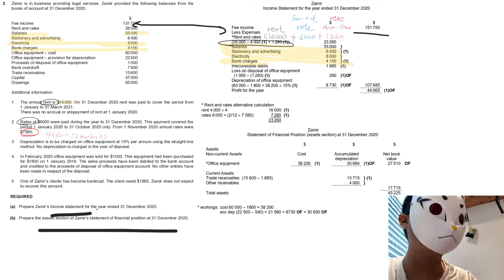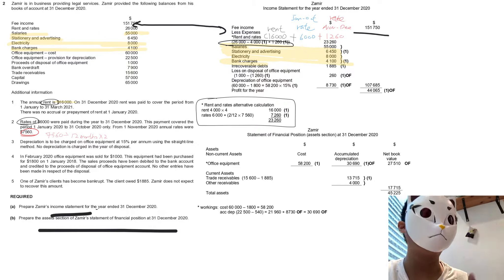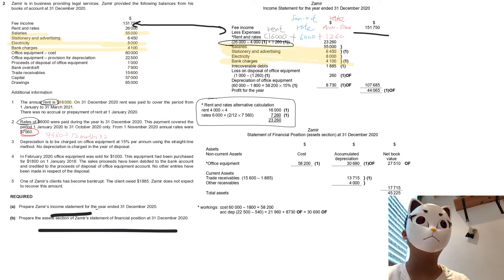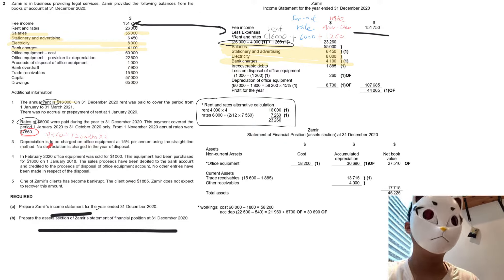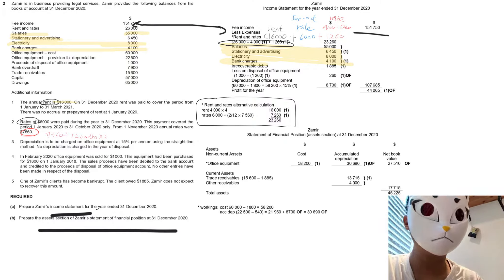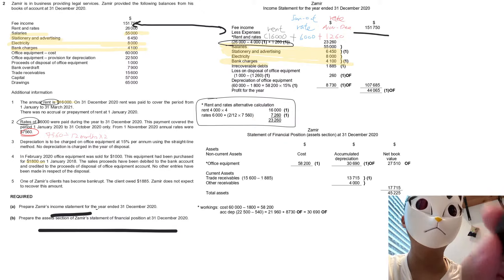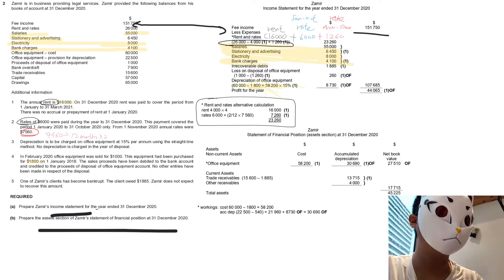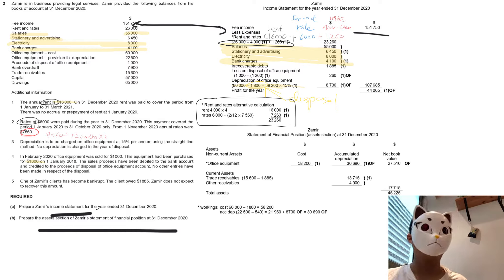You may also refer to the alternative way of doing the rates calculation. For item three, it uses the straight-line method, which means we can identify the provision for depreciation. But do not use 60,000 times 15% directly — that will be wrong, because 1,800 worth of assets will be disposed of. When calculating depreciation, you have to minus the disposed asset.